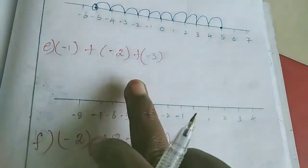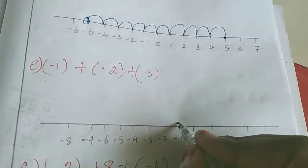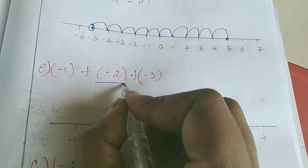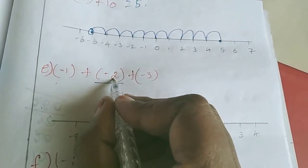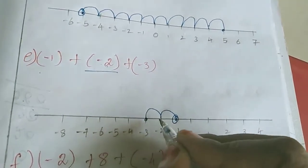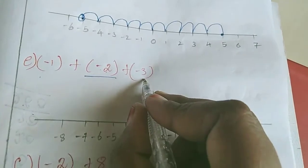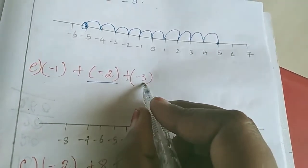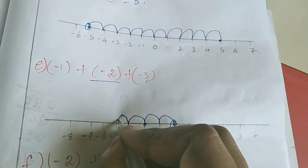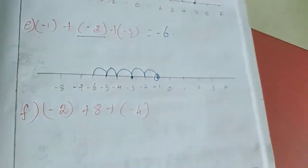Sum E: first number is minus 1 — marked here. Next number is minus 2, so we want to move left side 2 steps: 1, 2. The answer so far is minus 3. Next number is also minus 3, so again we move 3 steps to the left: 1, 2, 3. The answer is minus 6.